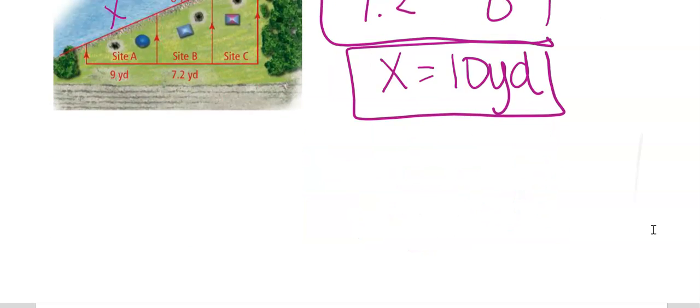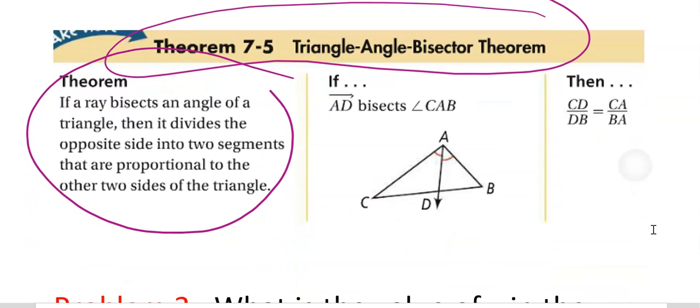Triangle angle bisector theorem: If a ray bisects an angle of a triangle, then it divides the opposite side into two segments that are proportional to the other two sides of the triangle. When you look at how this one is set up, CD over DB, notice again these are on the same segment. Also they're opposite those congruent angles, so that kind of makes sense.